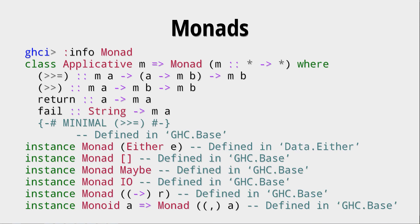when we look at the info for monads and if we look at the comments saying what the minimal function is that we need to have for a monad, we see that there is only one function that we actually need in order to have a monad. So this means that if we understand this one function, we should be able to understand monads. But actually we are going to look at three functions here. We are going to look at return,